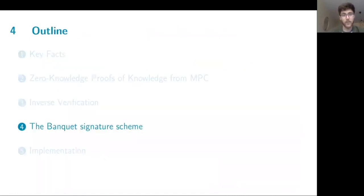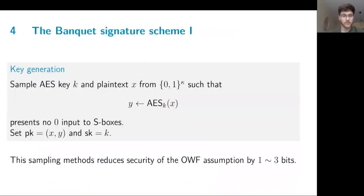So now we can put all of this together into the final signature scheme. The key generation, as I said before, is that we sample an AES key and a plaintext of an appropriate length, such that the execution of the AES algorithm doesn't present any zero input to its S-boxes. So in the BBQ paper, there was an analysis already, which showed that this reduced the security of the assumption by only one to three bits concretely.